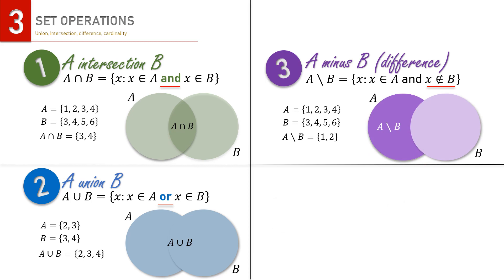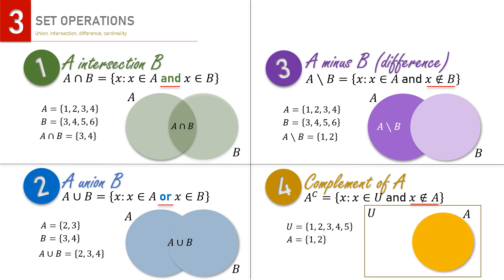Lastly, we have complement. Complement of a set A means not set A. If A is the subset of the universal set U here, look at the visualization too, then the complement is just the elements of the universal set that are not the elements of set A. In other words, complement of A is actually U minus A or the difference between U and A.